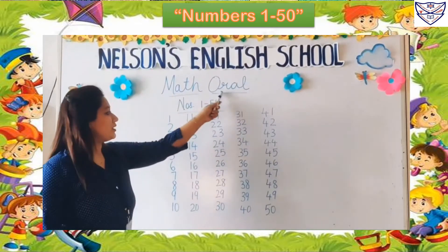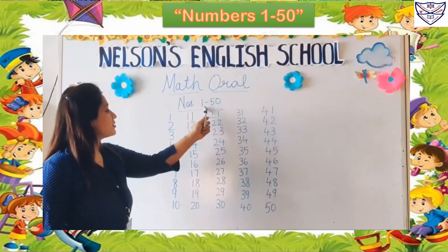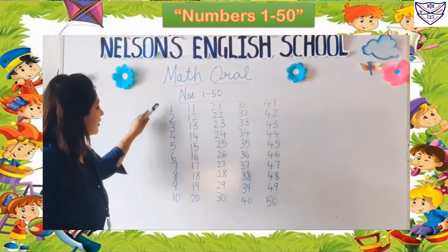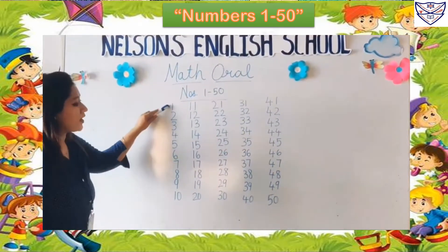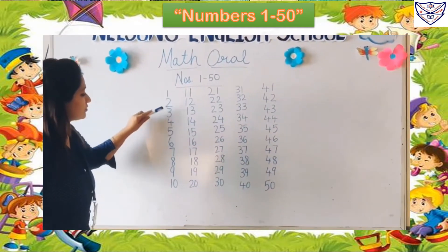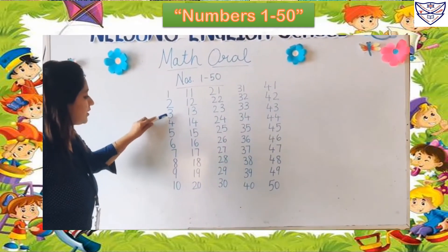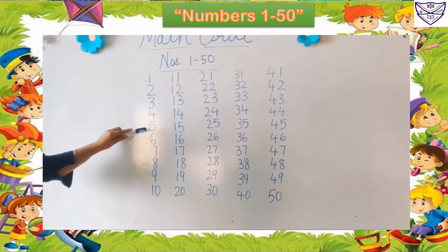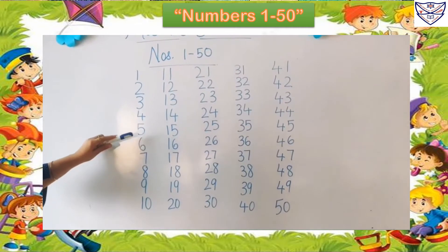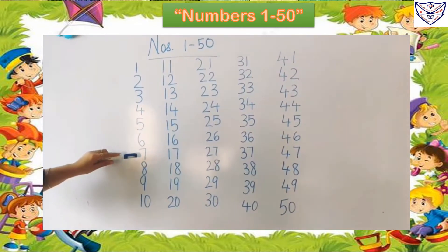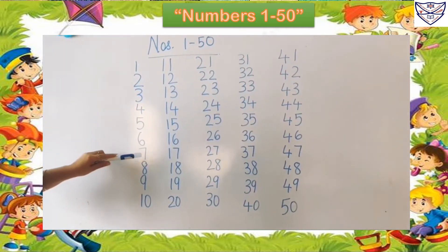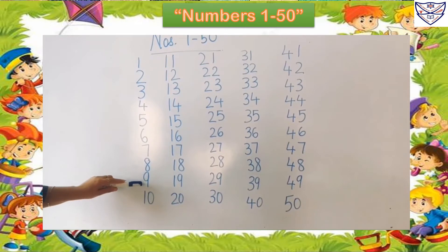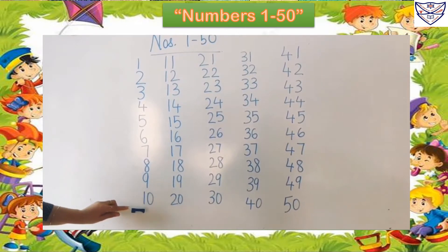Math oral numbers 1 to 50. 1, 2, 3, 4, 5, 6, 7, 8, 9, 10.